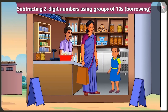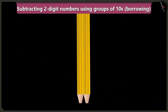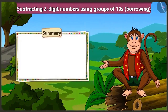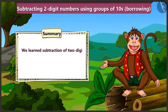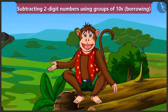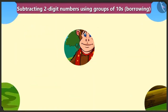In this way, after subtracting 27 rupees from 50 rupees, the milk seller uncle will return us 2 tens and 3 ones — means 23 rupees. Well done, Bubbly. Let's go home now. Today we learnt subtraction of 2-digit numbers by borrowing using the group of tens. In the next video, we will see some more examples of similar subtractions.